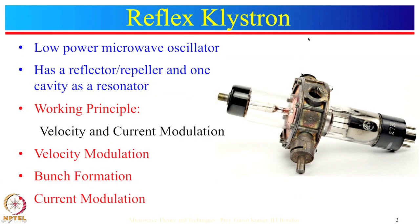The working of reflex klystron is somewhat similar to the 2-cavity klystron. Its working principle is velocity and current modulation. An electron beam is injected from the cathode and travels with uniform velocity to the cavity. In the cavity gap, the velocity of electrons is modulated. Those velocity-modulated electrons enter the repeller space with different velocities. Because of velocity modulation and repulsive forces from the repeller plate, bunching takes place during the return journey of electrons to the cavity, causing current modulation.